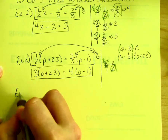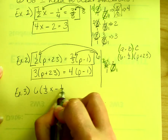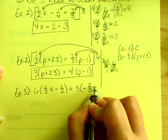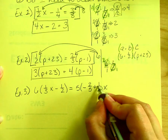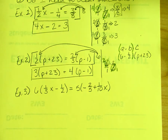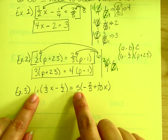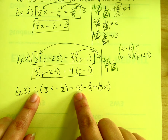Example three: six times the quantity one third x minus one half equals five times the quantity negative two fifths plus one tenth x. In this case, the fractions are inside the parentheses. When that happens, check if the number on the outside was chosen to clear the fractions — if so, distribute first. Distribute whatever's on the outside to see if it clears the fractions. If it does, great; if not, regroup and decide what else to do.